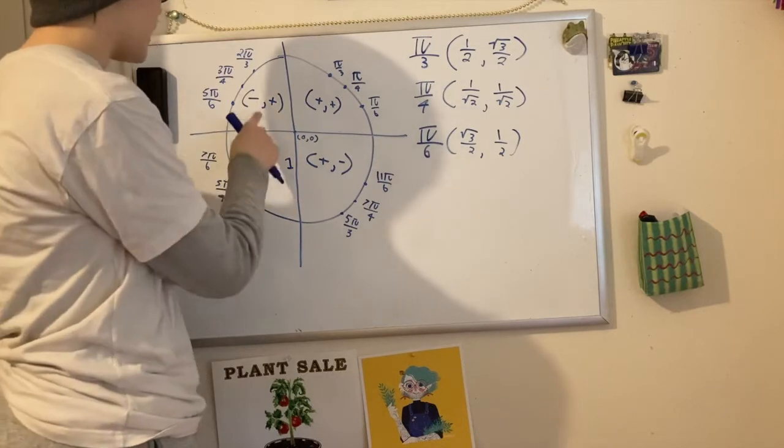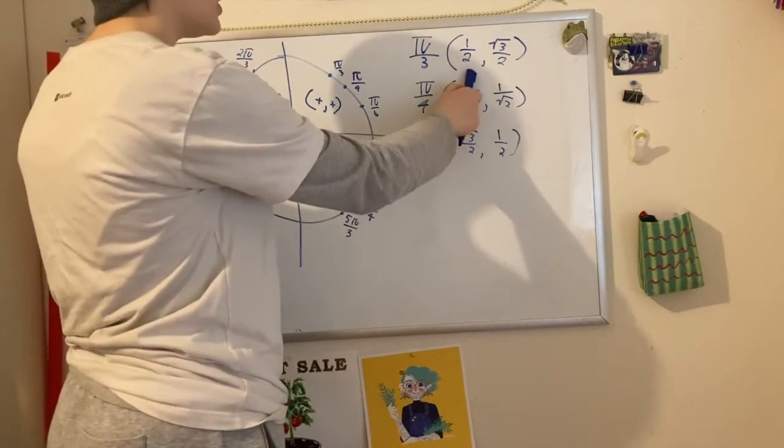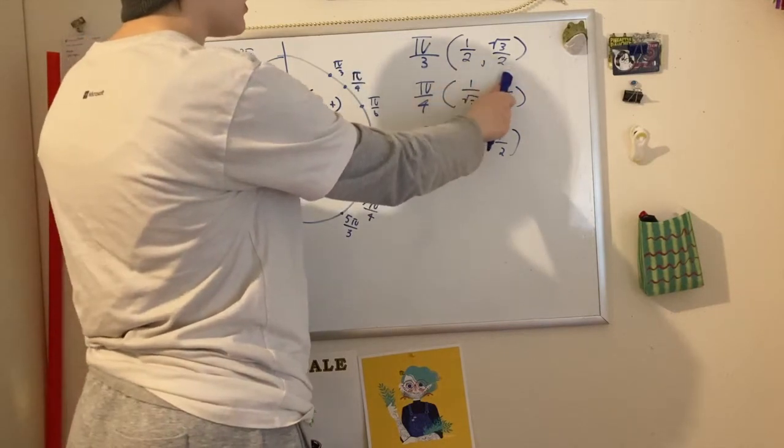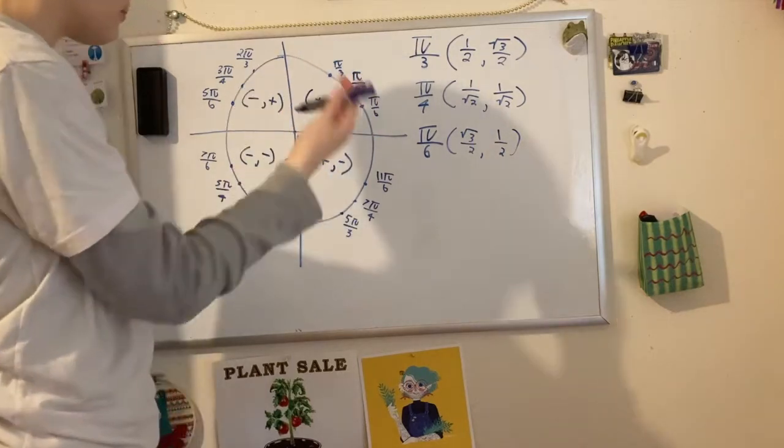is going to have the negative cosine and a positive sine. We've memorized that π/3 has 1/2 and then √3/2. And so therefore, it's going to be negative 1/2, √3/2. Same for any of these.